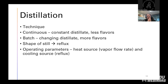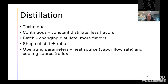In continuous versus batch columns: continuous in general gives a constant distillate — constant in flow rate and in compounds. If you look at a continuous column distillate over time, it will taste the same the whole time because the temperature is constant, and because of that you're likely to get a little less flavor. In batch columns, you have a constantly changing distillate — the hearts at the beginning, middle, and end all taste different, which is a good thing because you're getting many different flavor and aroma compounds. You have to pay a lot more attention to your cuts. Continuous stills tend to be seen mainly as stripping columns or in very large facilities.